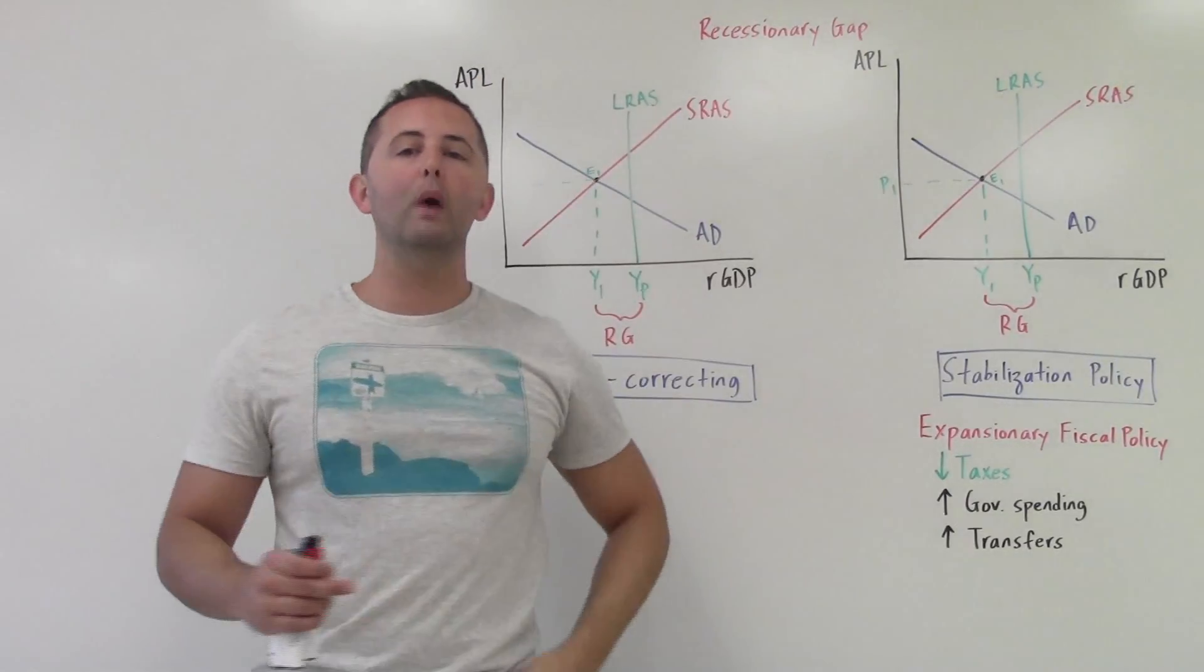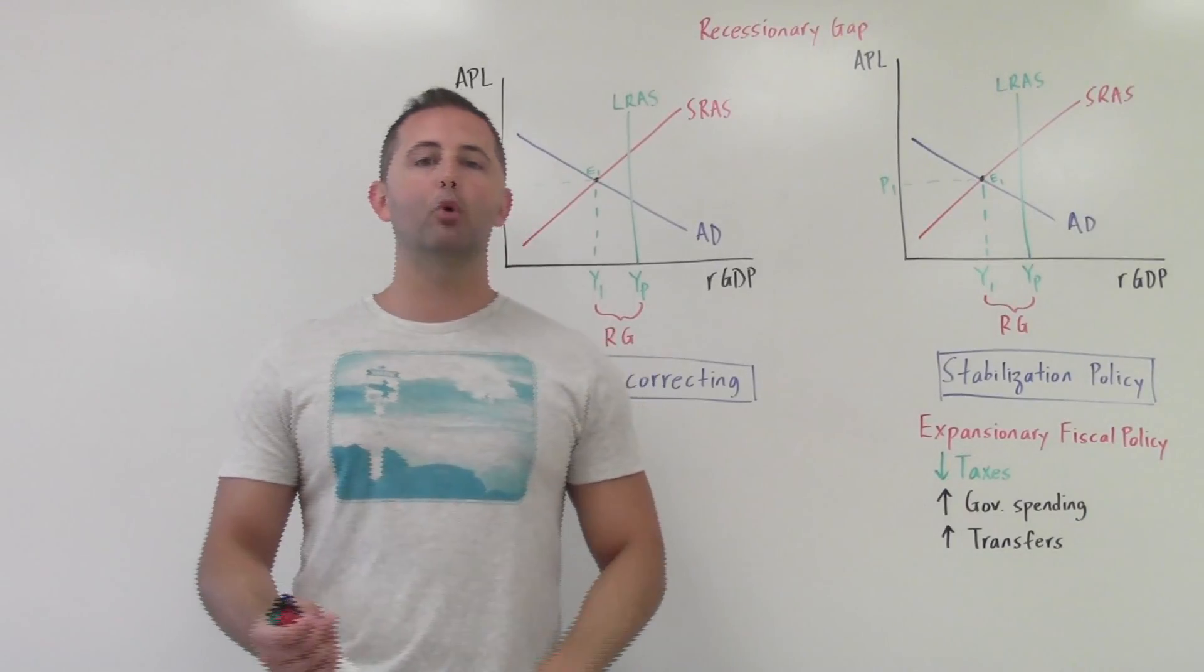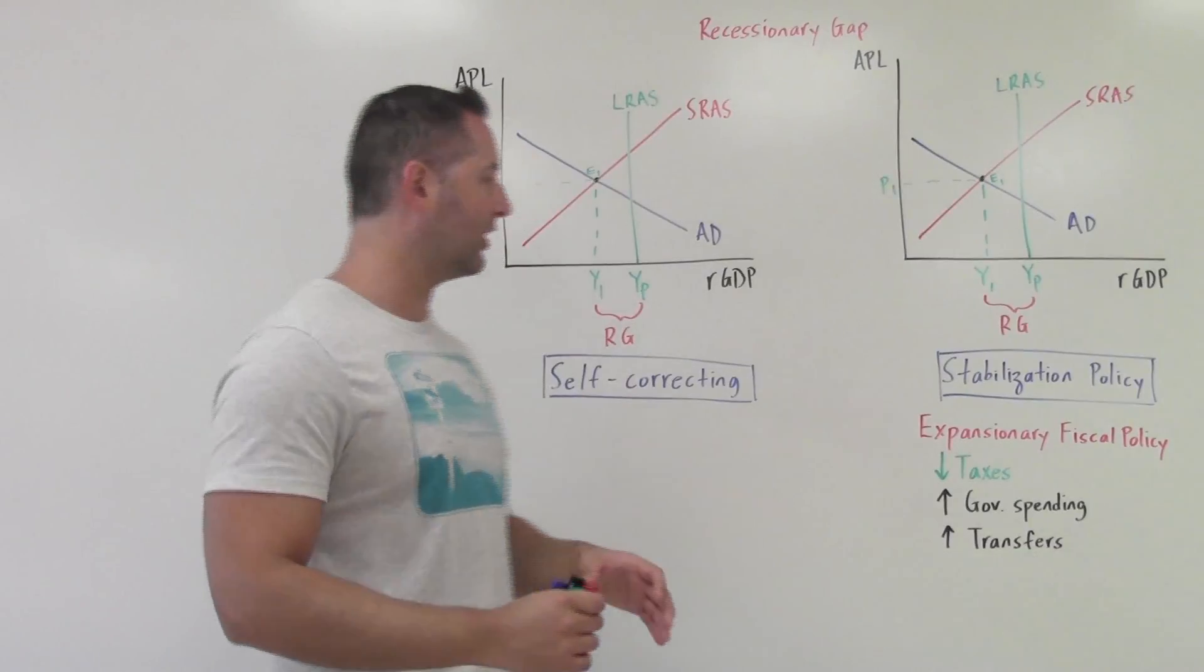So there are two ways that the economy will get back on track, and there are two very different ways. It's important that we understand each one of them very clearly.